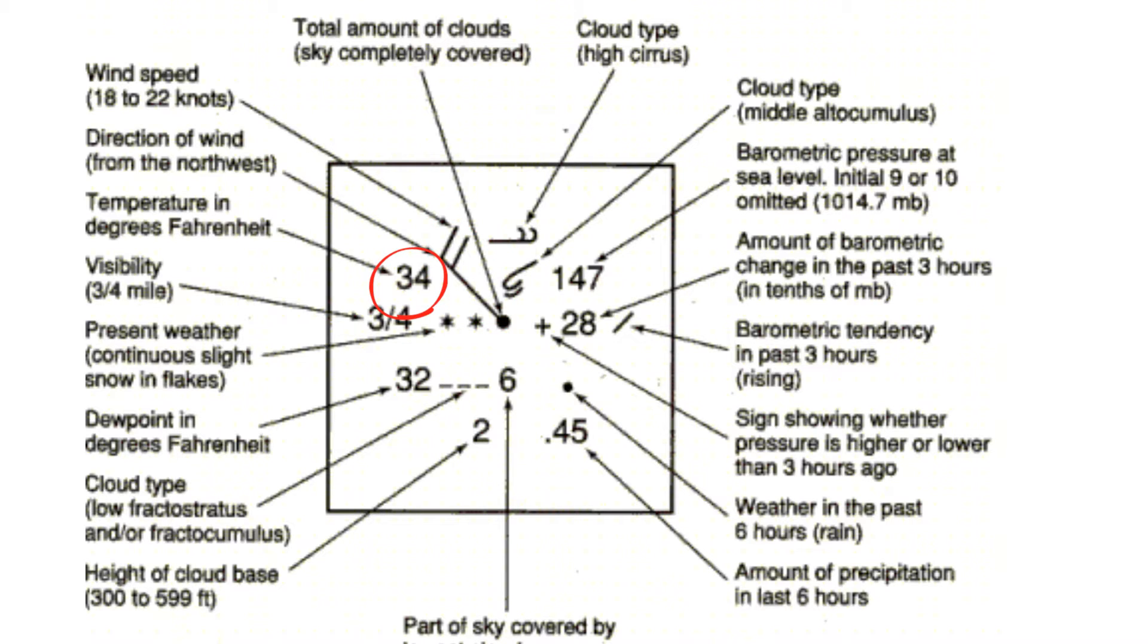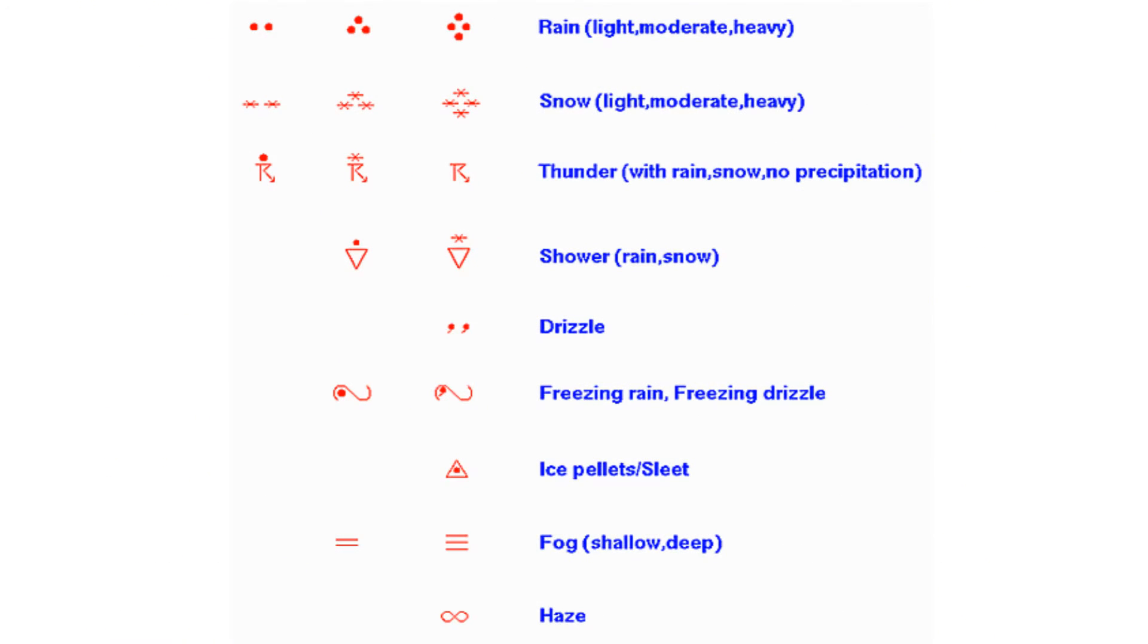Next you have the temperature and in the US it will be in Fahrenheit. Next you have the visibility in miles. Next you have present weather. In this particular example you have snow in flakes but you would use a chart similar to this to figure out what the present weather is.